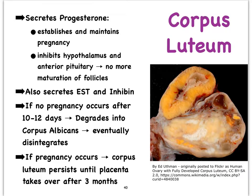The corpus albicans eventually becomes smaller and smaller. On the other hand, if pregnancy does occur, the corpus luteum will persist and keep going until the placenta can take over after about three months.